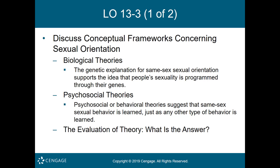The genetic explanation supports the idea that people's sexuality is programmed through their genes. Researchers studying identical twins found that when one identical twin was gay, 52 percent of the time their twin brother was also gay. Among fraternal twins, only 22 percent of pairs were both gay, and when brothers were adopted, both were gay only 11 percent of the time. Researchers concluded this provides evidence for a genetic link.